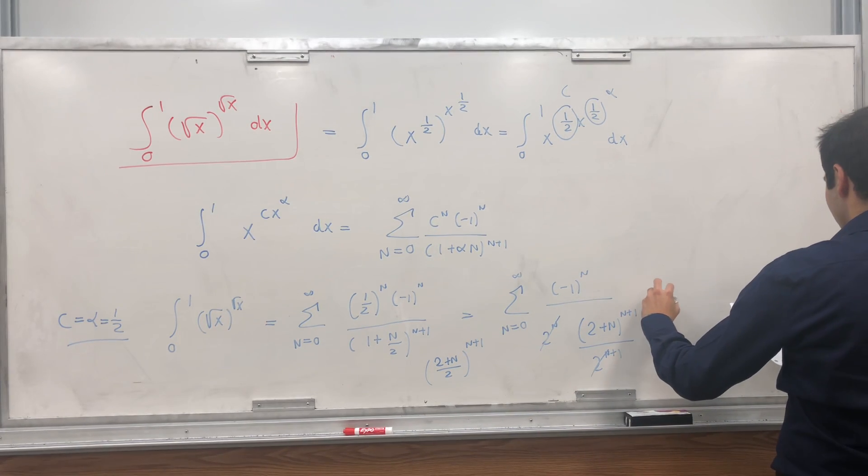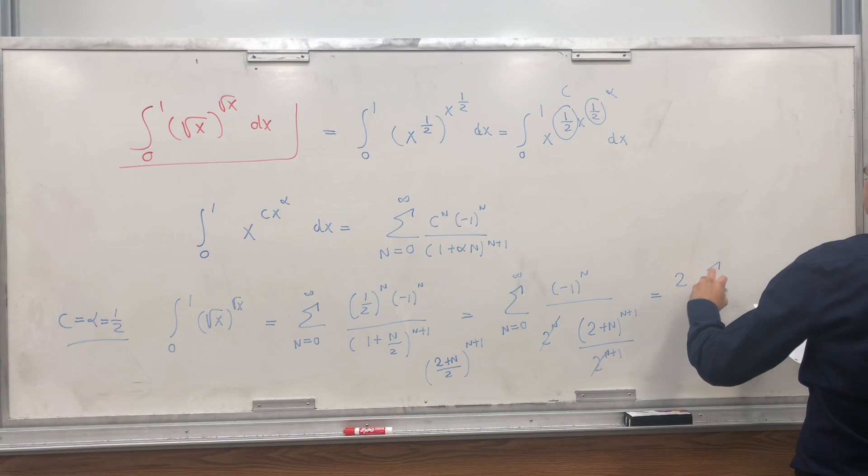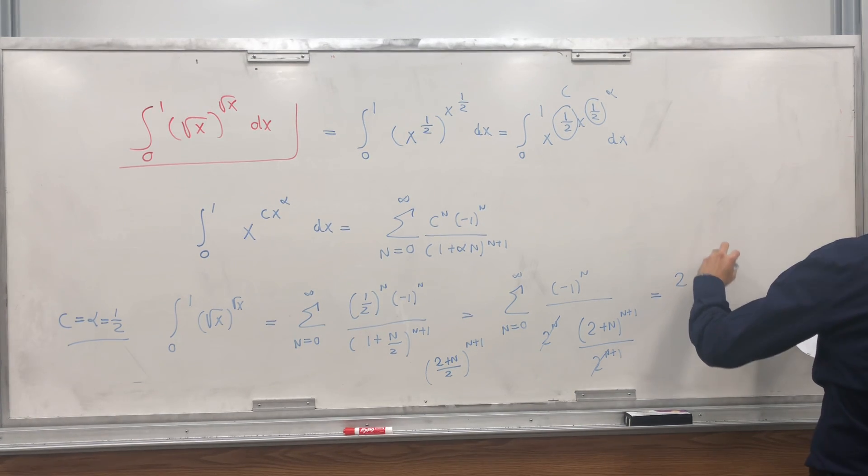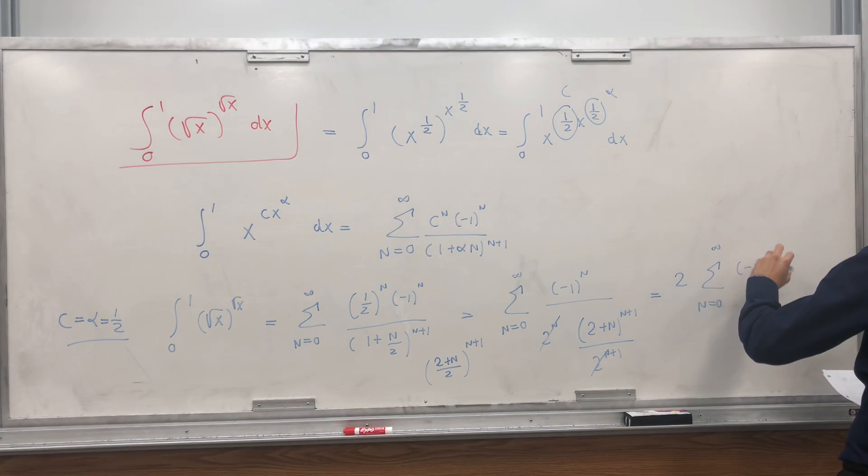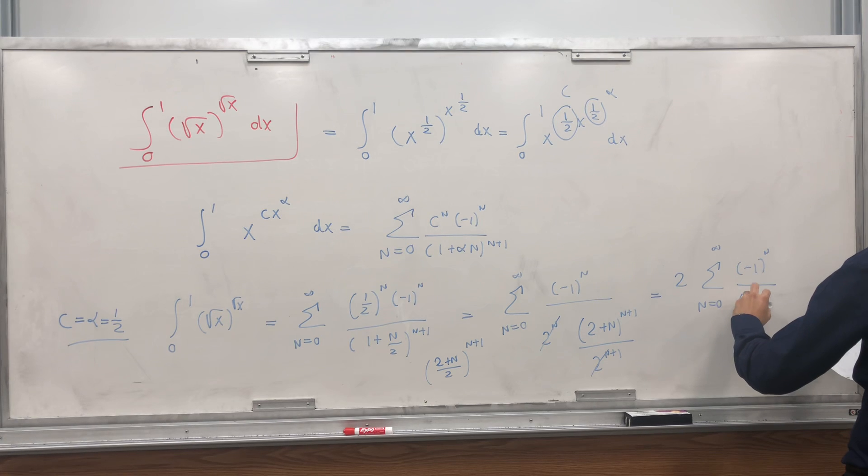And then you're just left with 2 times n plus 2 times the sum from n equals 0 to infinity of minus 1 to the n over n plus 2 to the n plus 1.